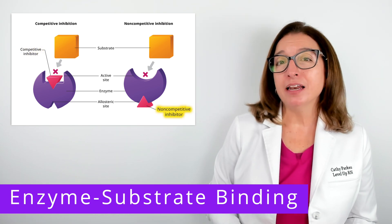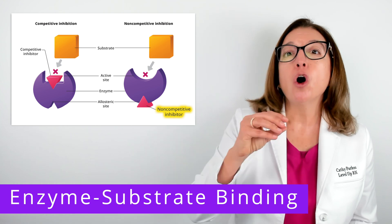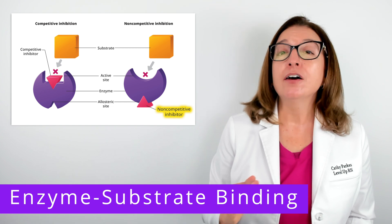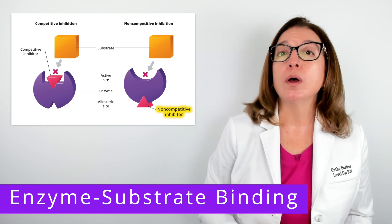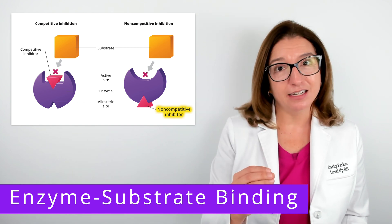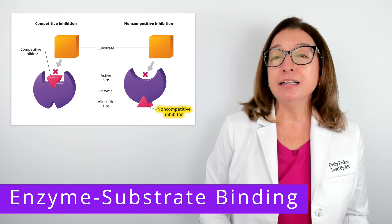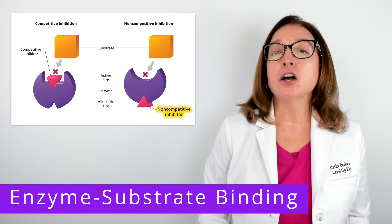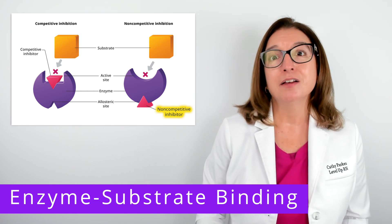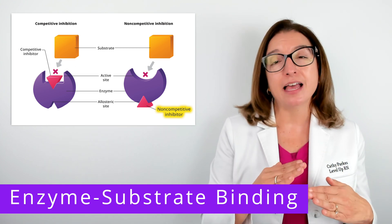A non-competitive or allosteric inhibitor binds to the enzyme at a location away from the active site, called the allosteric site. This binding causes the enzyme to undergo a conformational change, which changes the shape of the active site. For example, in the illustration shown on the screen, binding of the non-competitive inhibitor caused the active site to change from a square shape to a circle shape, so now the substrate cannot bind to the active site, which prevents enzyme activity.